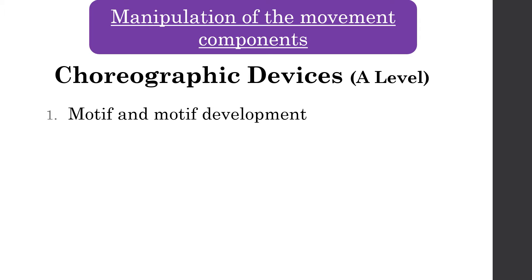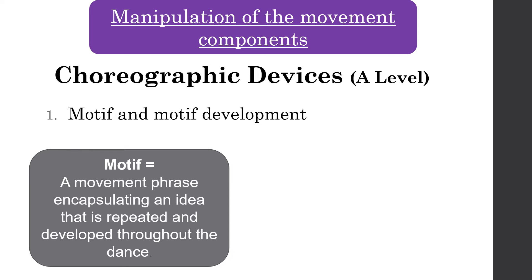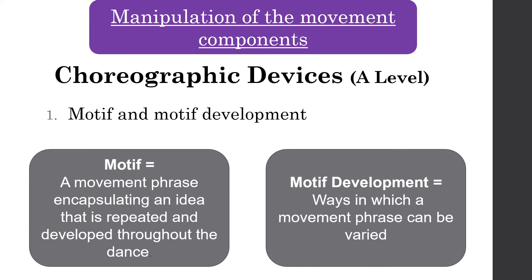Let's start with number one: motif and motif development. It's super important that we understand what this is so we can use it practically. A motif is a movement phrase encapsulating an idea that is repeated and developed throughout the dance — essentially a short, small phrase of movement that can be varied, manipulated, changed and developed throughout. Motif and development, therefore, is the ways in which a movement phrase can be varied — the different ways you are changing that movement phrase.